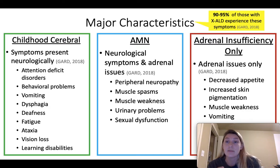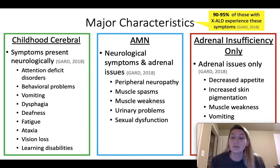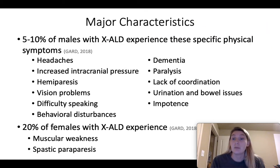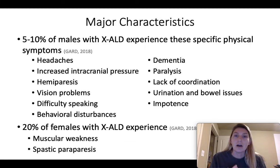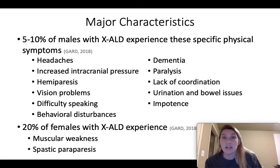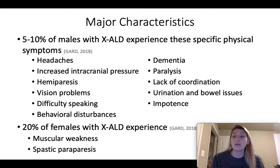Now 90 to 95% of those with XALD experience symptoms in these three groups, but not 100%. So 5 to 10% of males with XALD will experience other specific physical symptoms such as headaches due to increased intracranial pressure, paralysis, and dementia. Females can also have XALD — 20% of females with XALD will experience muscular weakness and spastic paraparesis.